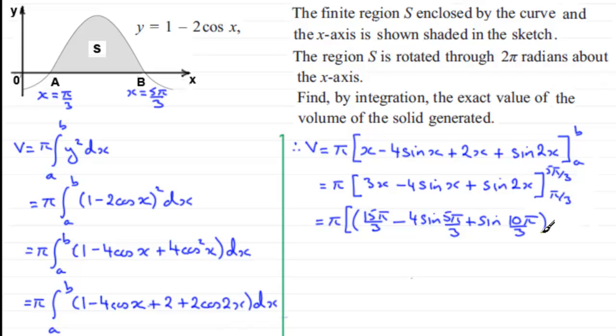So we've closed that off, and to this we need to subtract what we get when we now put pi upon 3 through here. So 3 lots of pi upon 3 is just pi. Then here we've got minus 4 sin of pi upon 3, and then finally plus the sin of 2 pi upon 3.